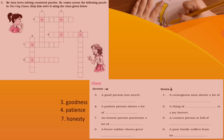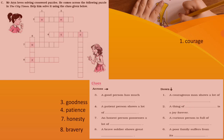A brave soldier shows great — bravery. And then down: a courageous man shows a lot of courage. A thing of beauty is a joy forever. A curious person is full of curiosity — a person who wants to know more and more. And the last one: a poor family suffers from its poverty.